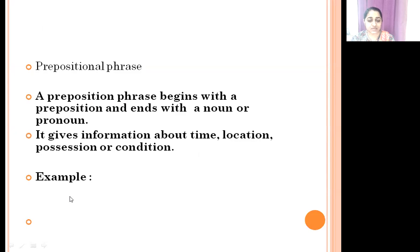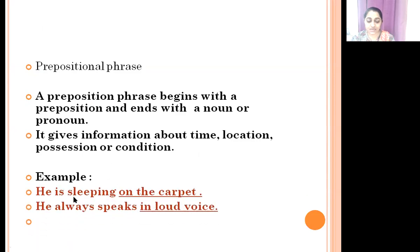Last is Prepositional phrase. A prepositional phrase begins with a preposition and ends with a noun or a pronoun. It gives information about time, location, position, or condition. For example: 'He is sleeping on the carpet.' Here 'on' is the preposition and 'on the carpet' is the prepositional phrase. Another example: 'He always speaks in a loud voice.' Here 'in' is the preposition and 'in a loud voice' is the prepositional phrase.